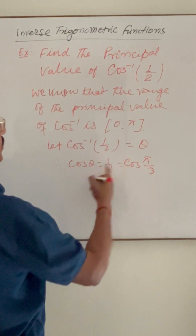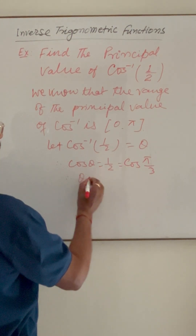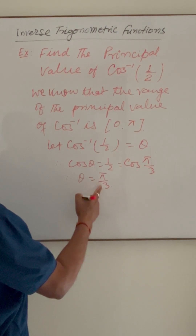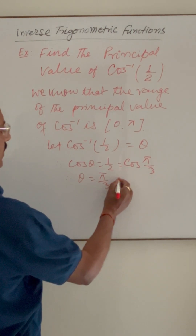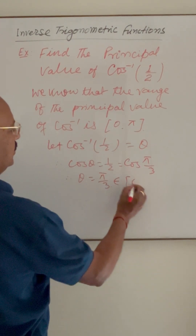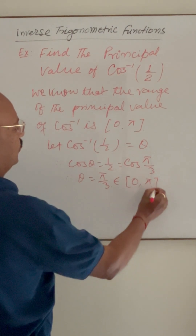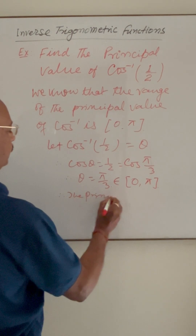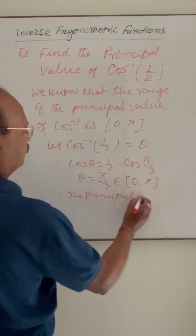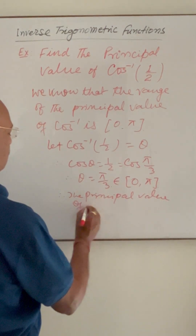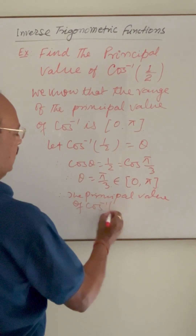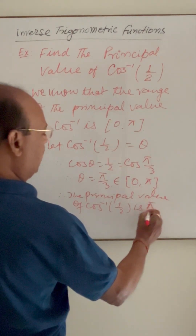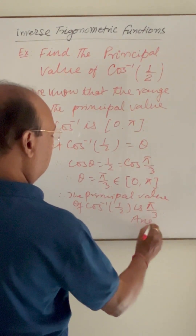By comparing this relation, we get theta is equal to pi by 3. Since pi by 3 belongs to the range 0 to pi, the principal value of cos inverse 1 by 2 is pi by 3. This is the answer.